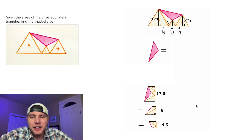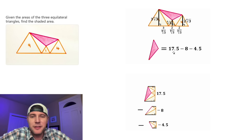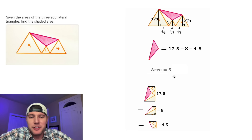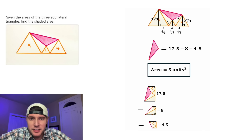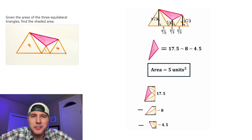Now let's find the area of the pink triangle. It's 17.5 minus 8 minus 4.5, which equals 5. Let's label it as units squared and put a box around it. The area of this pink triangle is 5 units squared.